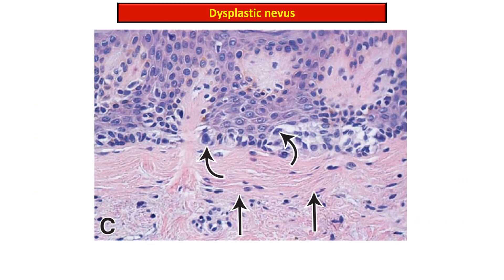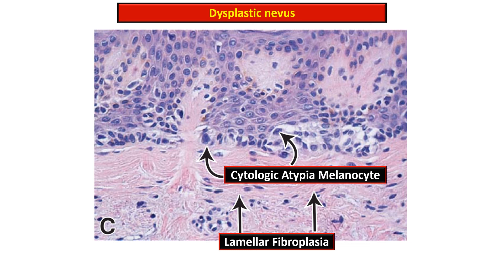This photomicrograph shows a high-power view of a dysplastic nevus with irregular melanocytes showing angulated, atypical, and hyperchromatic nuclei demonstrating cytologic atypia. These atypical melanocytes are resting on lamellar fibroplasia.